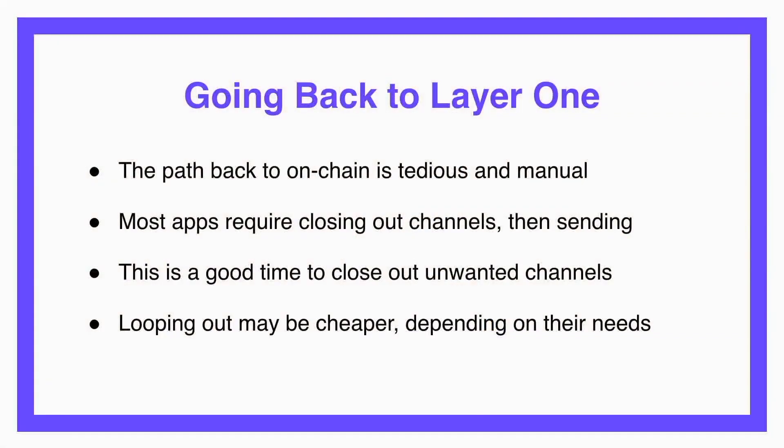The last part of the user experience I want to cover is the transition back to layer one. The path going back on-chain is really tedious and manual right now — you pick a channel to close, close it, wait for funds to confirm, then send your money. But we should leverage this as an opportunity to suggest how users should manage their nodes. We can score channels based on how much you use them, how balanced they are, how many channels they're connected to, and suggest closing unwanted ones. Users might also find that looping out or using an on-chain atomic swap is cheaper in the long run.